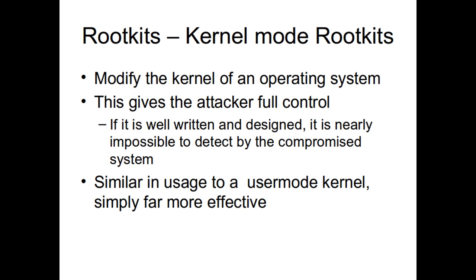Kernel mode rootkits modify the kernel of the operating system — the heart of the OS. All hardware access goes through the kernel, which means if you can control the kernel, you control the system. This basically gives the attacker full control over anything they want. If it's well written, you pretty much can't detect it — even if a program at user mode level goes looking for a list of ports, it has to talk to the kernel, and the kernel can simply hide those ports.